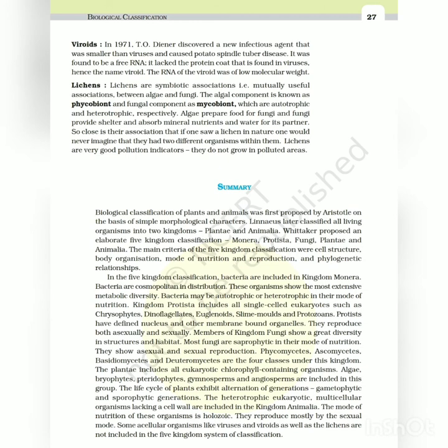In the five kingdom classification, bacteria are included in Kingdom Monera. Bacteria are cosmopolitan in distribution. These organisms show the most extensive metabolic diversity. Bacteria may be autotrophic or heterotrophic in their mode of nutrition. Kingdom Protista includes all single-celled eukaryotes such as chrysophytes, dinoflagellates, euglenoids, slime molds and protozoans. Protists have defined nucleus and other membrane-bound organelles. They reproduce both asexually and sexually.